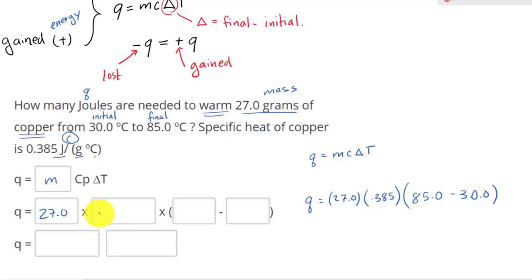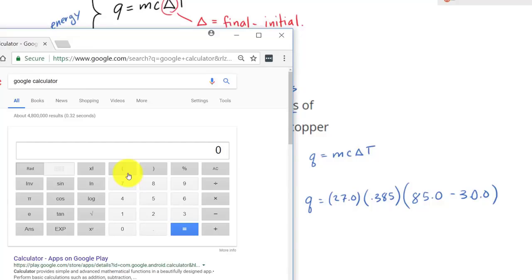And all you have to do is plug in here, 27 times 0.385, and then final, which is 85.0 minus 30.0. And that's it. Now let's plug this into our calculator using parentheses. And notice how I didn't use the multiplication sign, because when you have a number using parentheses, they are multiplied to each other. And this is our answer in Joules.